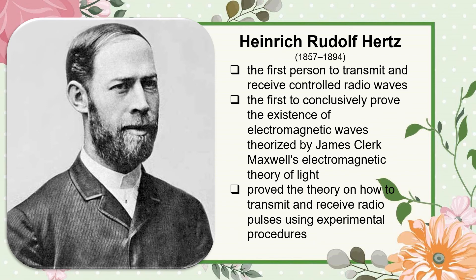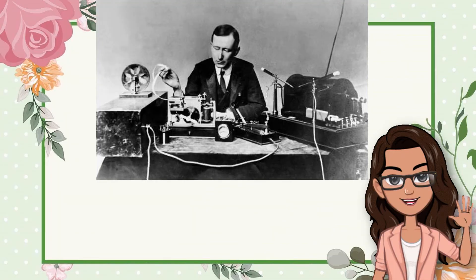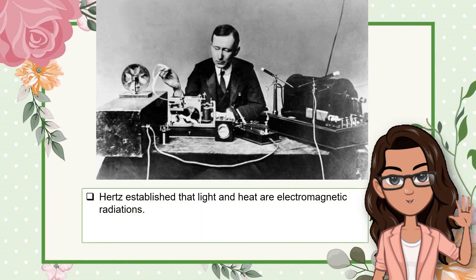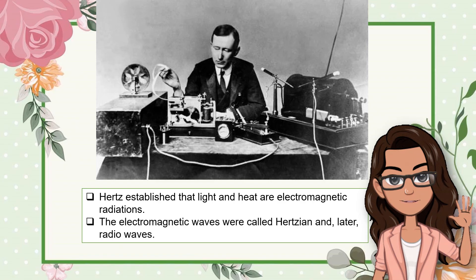Hertz proved the theory on how to transmit and receive radio pulses using experimental procedures. He planned a set of experiments to test Maxwell's hypothesis. The apparatus consisted of polished brass knobs, each connected to an induction coil and separated by a tiny gap over which sparks could leap. Between 1885 and 1889, while he was professor of physics, he produced electromagnetic waves in the laboratory and measured their length and velocity, showing that their vibration, reflection, and refraction were the same as those of light and heat waves, establishing that light and heat are electromagnetic radiations. The electromagnetic waves were called Hertzian waves and later radio waves.